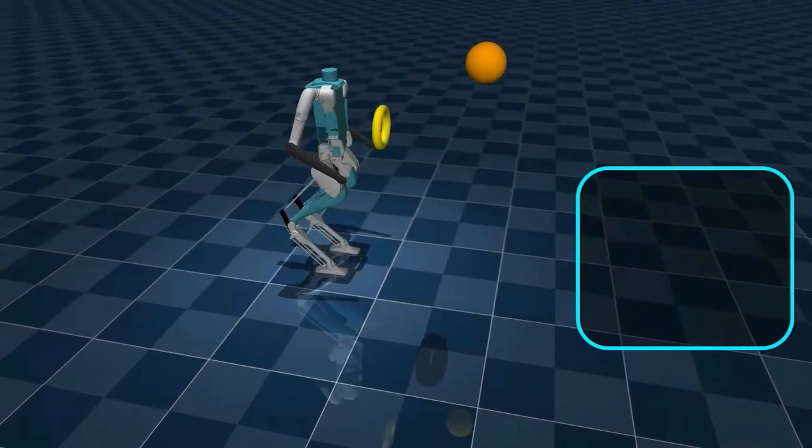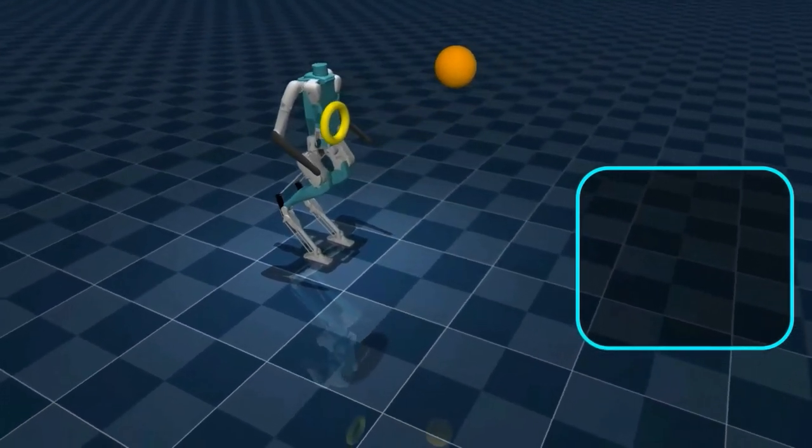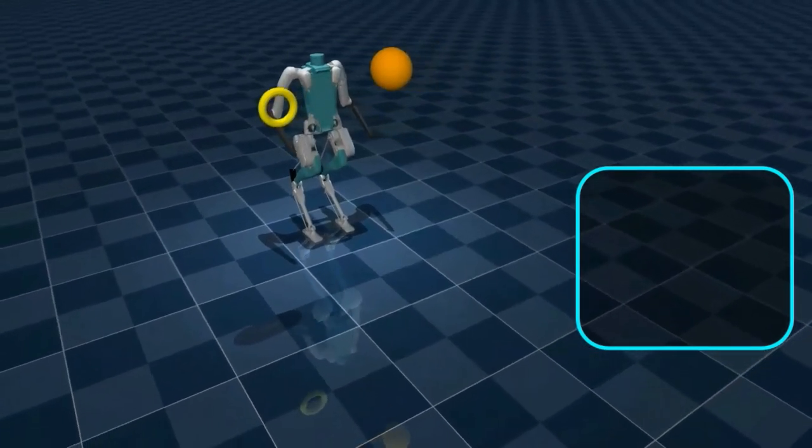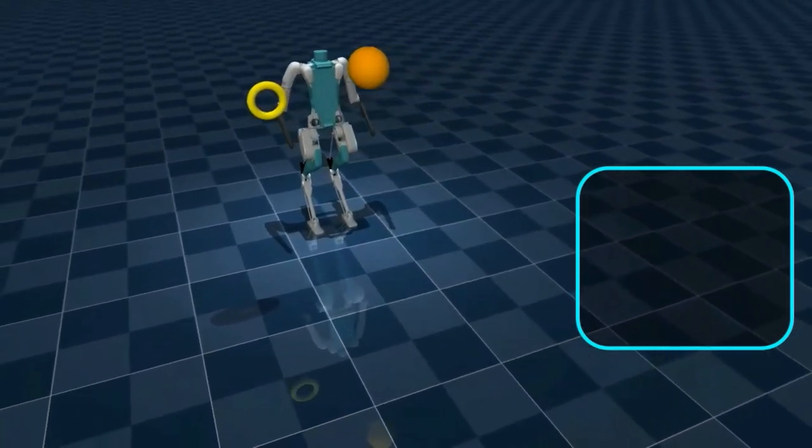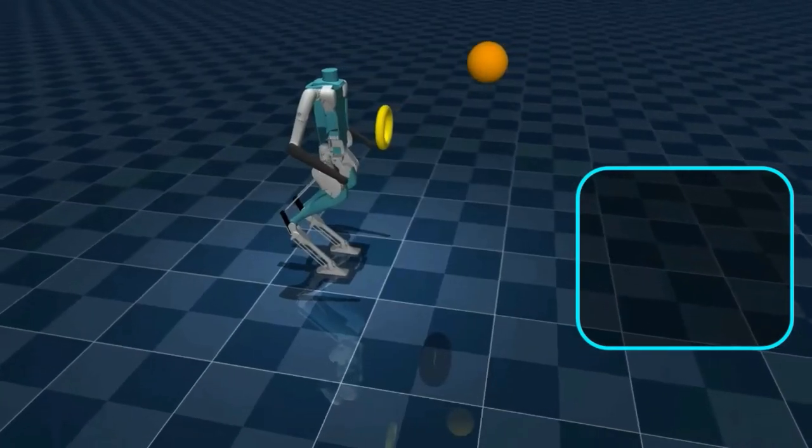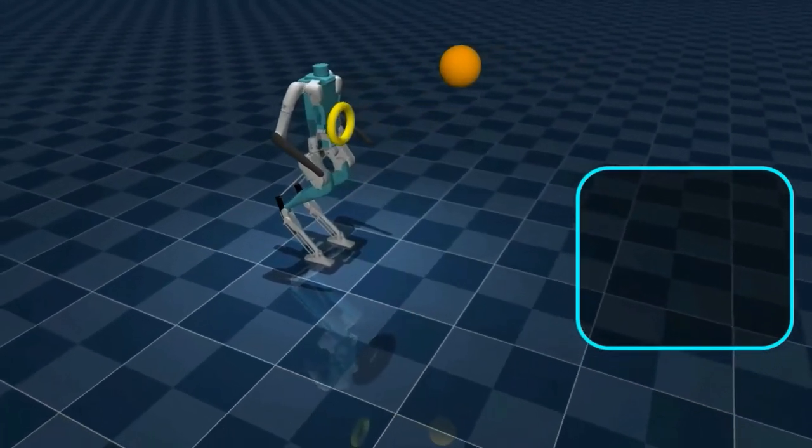Let's take a look at this whole body control task. In this task, the robot is supposed to keep its right hand in the yellow hoop while dodging the incoming orange basketball. We employ Kinodynamic Fabrics to design and compose prioritised motion behaviours to accomplish this task.